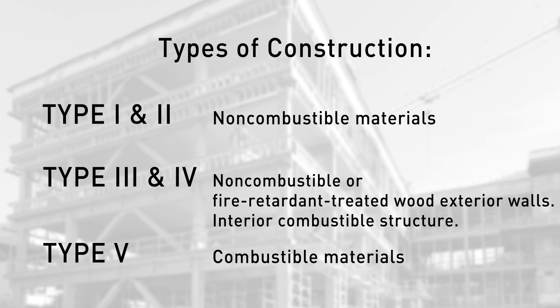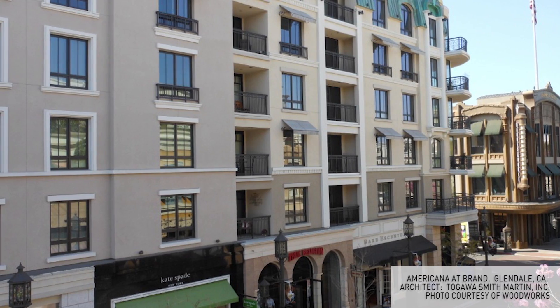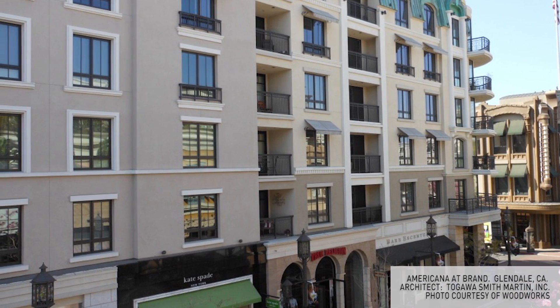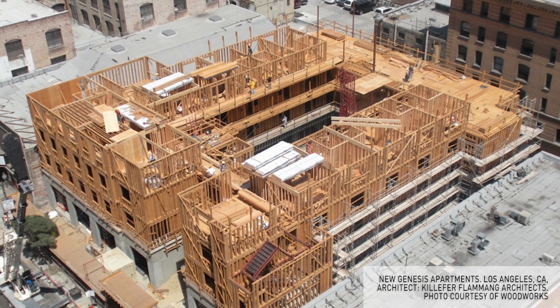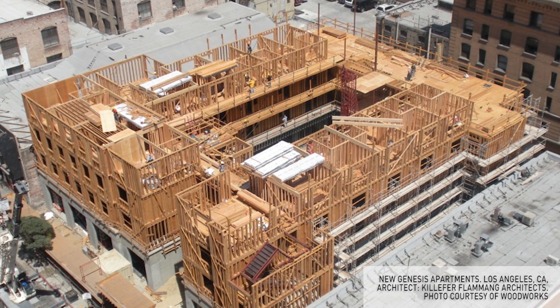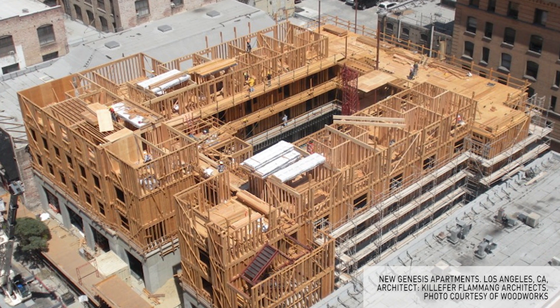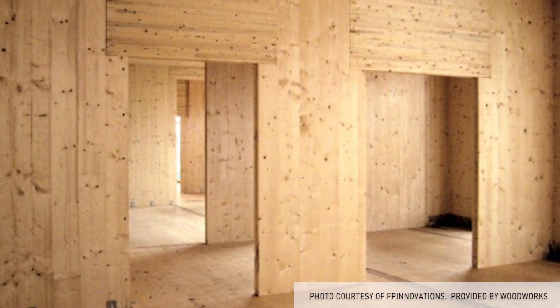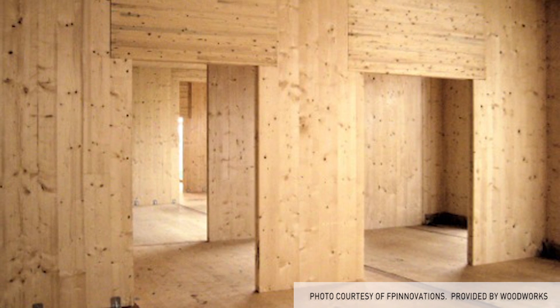Wood can play a role in most of those types of construction. In Type 3 construction, there's an exception in the code that allows fire retardant treated wood on the exterior of the wall. So basically, a Type 3 construction can be an all-wood building.